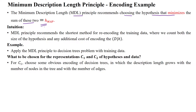This equals the MAP hypothesis. The intuition behind the MDL principle is that it recommends a short representation — transforming the message into a short form and re-encoding the training data — where we count both the size of the hypothesis and any additional cost of encoding the data given the hypothesis. This can be useful in decision tree problems with given training data.